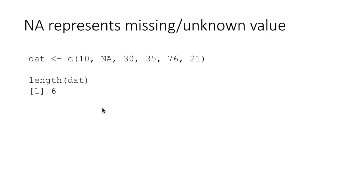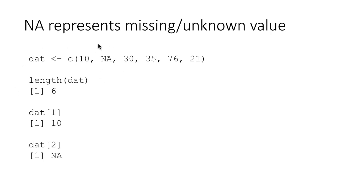When you compute length(), it treats NA as one of the elements. So if I do dat[1], I get 10, which is the first element. If I do dat[2], I get NA because the second element is missing. So whenever you see NA, that means it's a missing value.